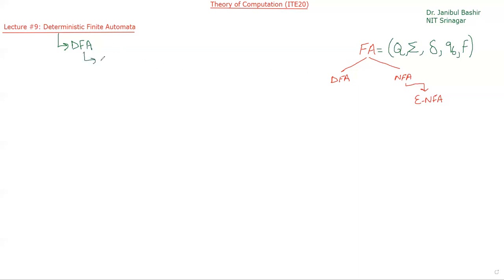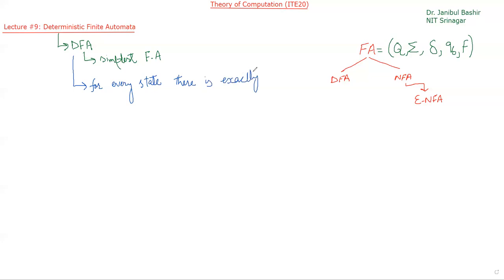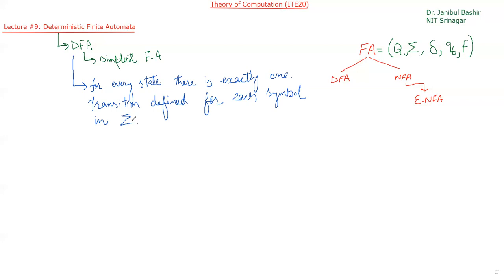DFA is the simplest finite automata. For a DFA, for every state, there is exactly one transition defined for each symbol in the alphabet set sigma. This is the deterministic feature of a DFA.